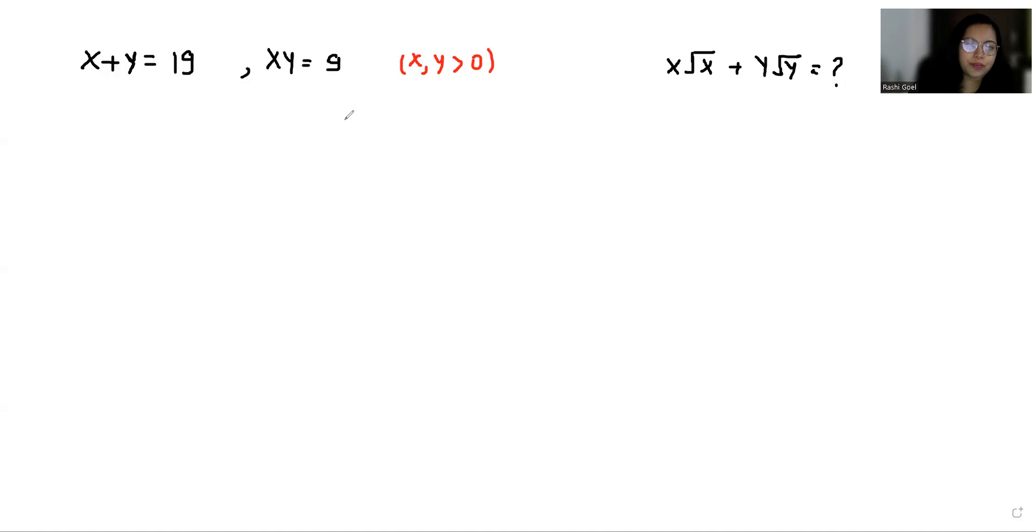I'm taking root x plus root y whole square which equals a square, that is root x squared plus root y squared plus 2 times root x root y. The value of x plus y is 19 plus 2, and root xy is root 9.